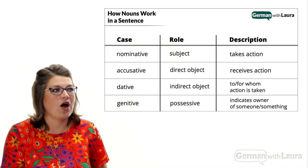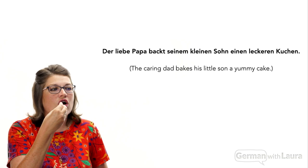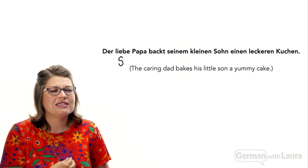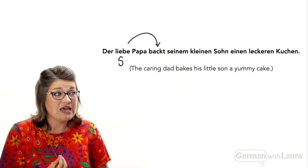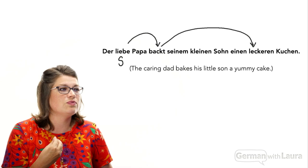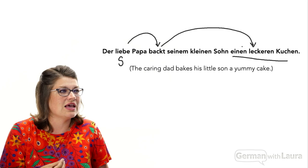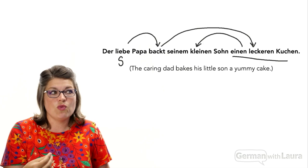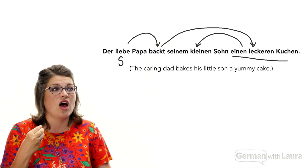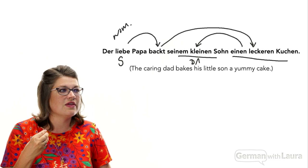With just this information, I want you to see in our sentence that we go from the caring papa — der liebe Papa — as the subject of the sentence taking the action of baking, to directly connecting to what is being baked: a yummy cake. And indirectly, that action is being taken for the small son. So there we have the subject noun in the nominative case, the indirect object in the dative case, and the direct object in the accusative case.